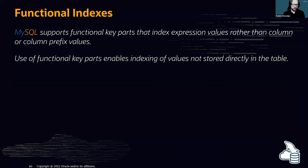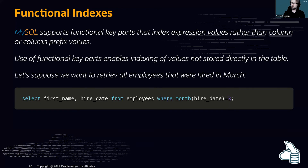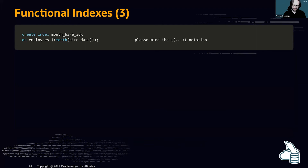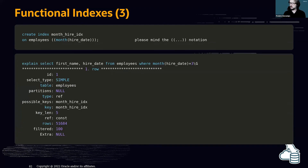MySQL also supports functional key parts — indexing expressions using MySQL functions. For example, if you want to find employees hired in a specific month, a query like WHERE MONTH(hire_date) = 3 would normally require a full table scan of almost 300,000 rows. But you can create a functional index using the MONTH() function — note the double parentheses in the CREATE INDEX syntax. After creating this index, the query uses it instead of doing a full table scan.